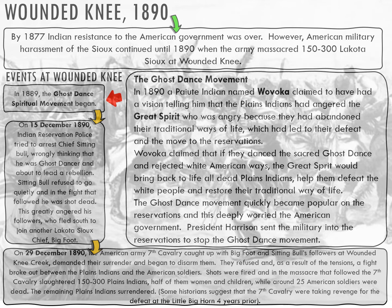His followers head into Bigfoot's group. By almost the new year — 29th of December — the American army, the 7th Cavalry, who had fought at the Battle of the Little Bighorn a few years prior, caught up with Bigfoot and Sitting Bull's followers at Wounded Knee Creek. And so we have this last stand, and ultimately the resistance peters out.